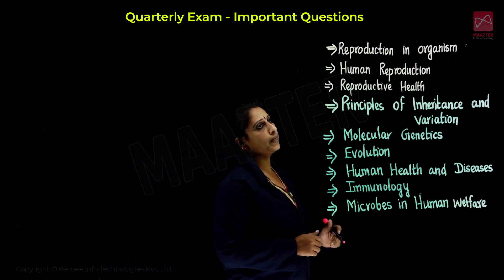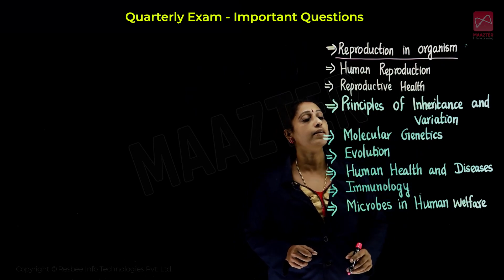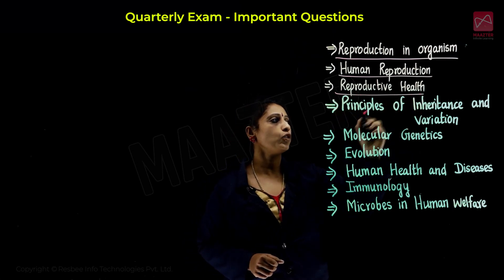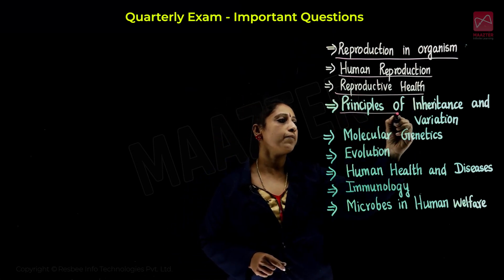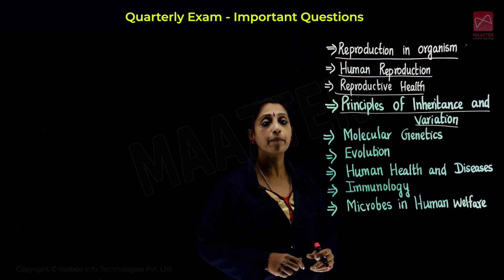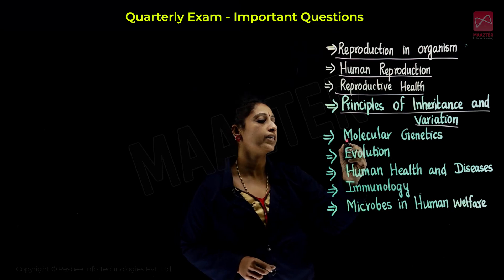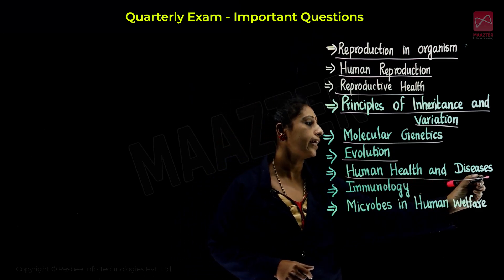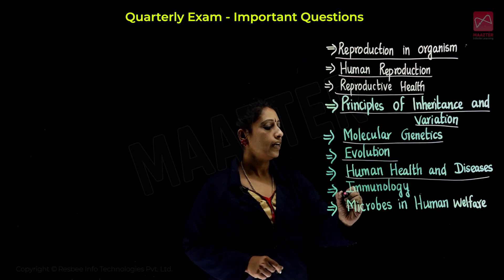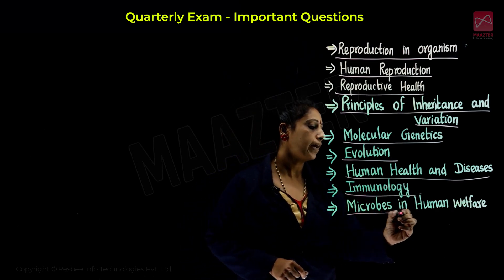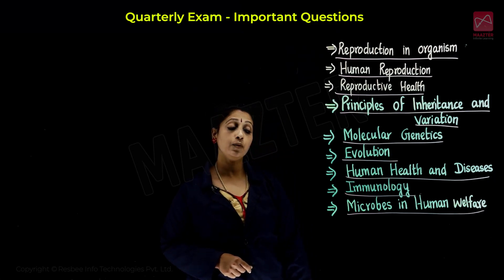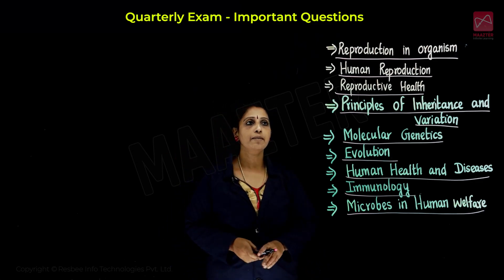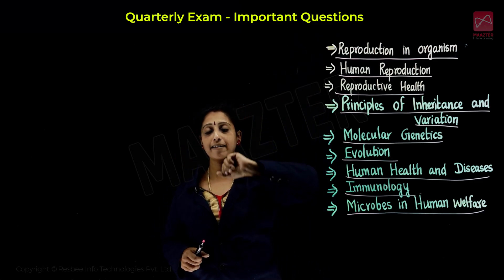The chapters we will cover are: Reproduction in Organism, Human Reproduction, Reproductive Health, Principles of Inheritance and Variation, Molecular Genetics, Evolution, Human Health and Diseases, Human Biology and Immunology, and Microbes in Human Welfare. For biology students, in these two units, we have to learn the first three chapters first.